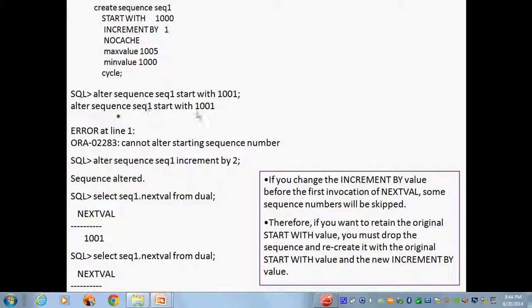Now, what I am doing? After creating, immediately I am doing start with. Start with is not possible. Only increment, no cache, maximum value, minimum value, cycle, these you can alter. Now, what I am doing? I am altering now. After altering, I am giving next value.